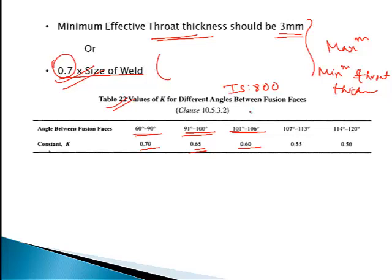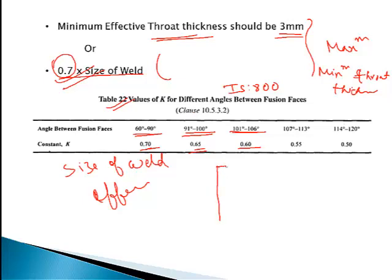If we do a numerical, I think it will be easy. Regarding effective throat thickness: the throat thickness is actually the full diagonal distance from the face. But the effective throat thickness is the perpendicular distance from the face to the root — I draw a perpendicular line and that is the effective throat thickness.